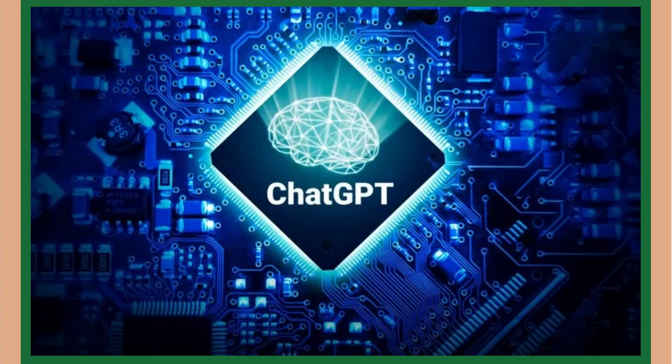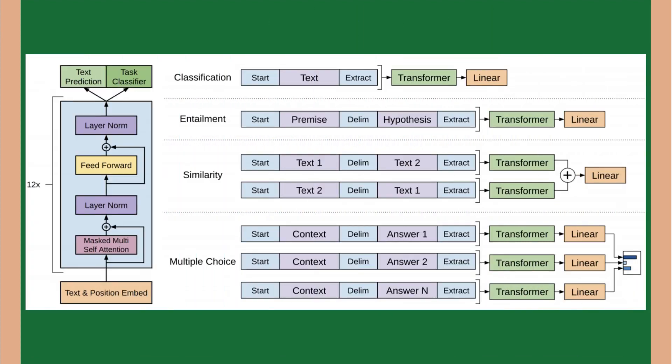Now, let's talk about ChatGPT, a popular AI bot created using a neural network. It's based on the GPT architecture, which stands for Generative Pre-Trained Transformer. The GPT architecture uses a transformer model, which allows it to understand and generate human-like text.